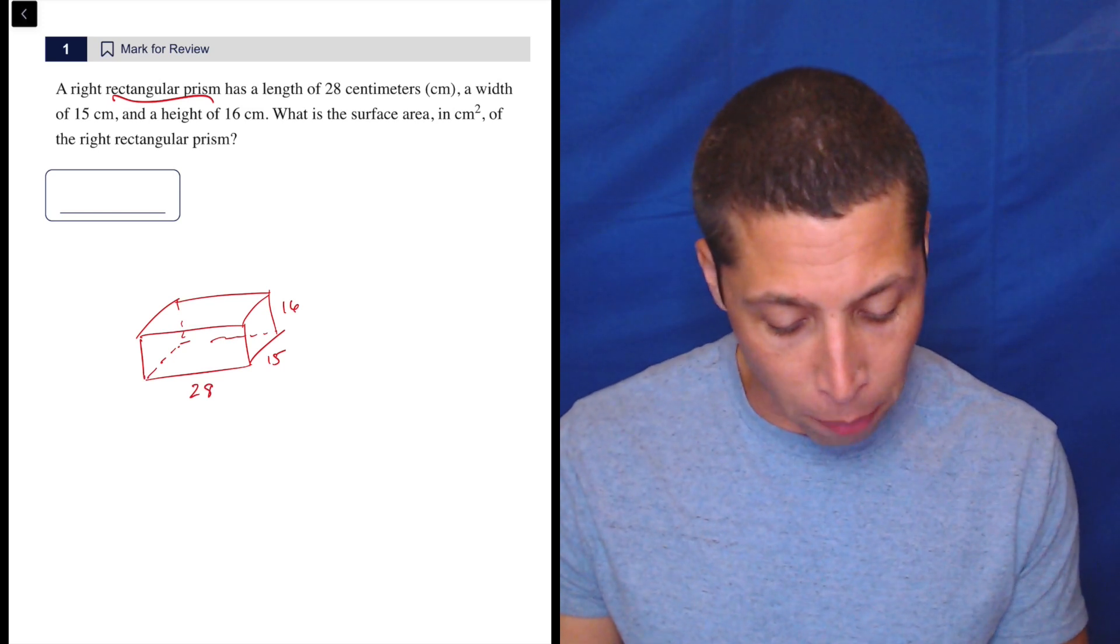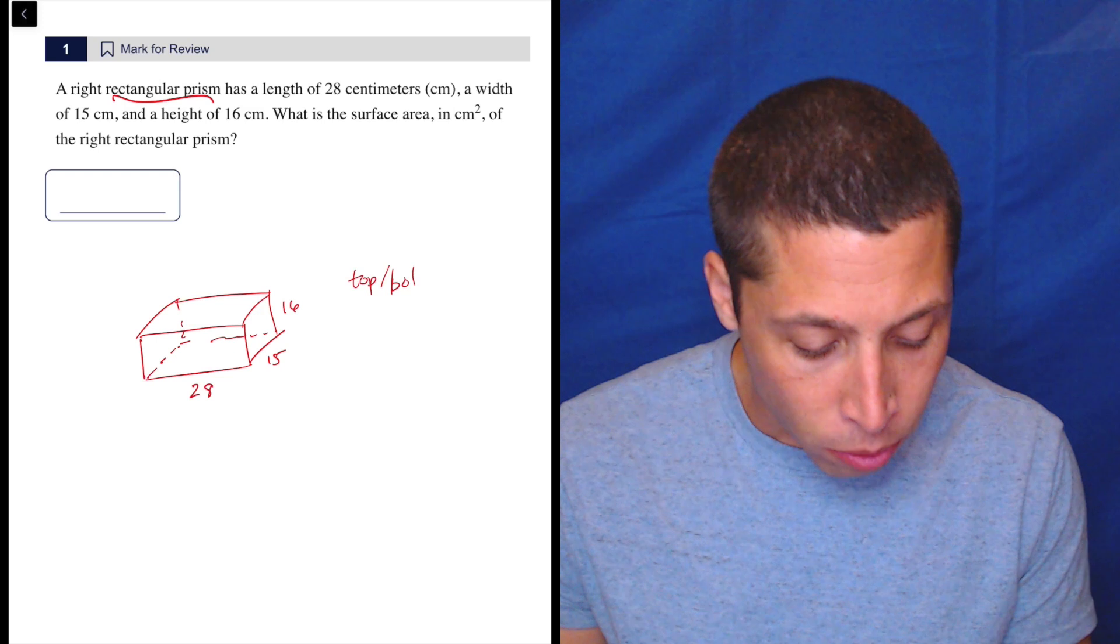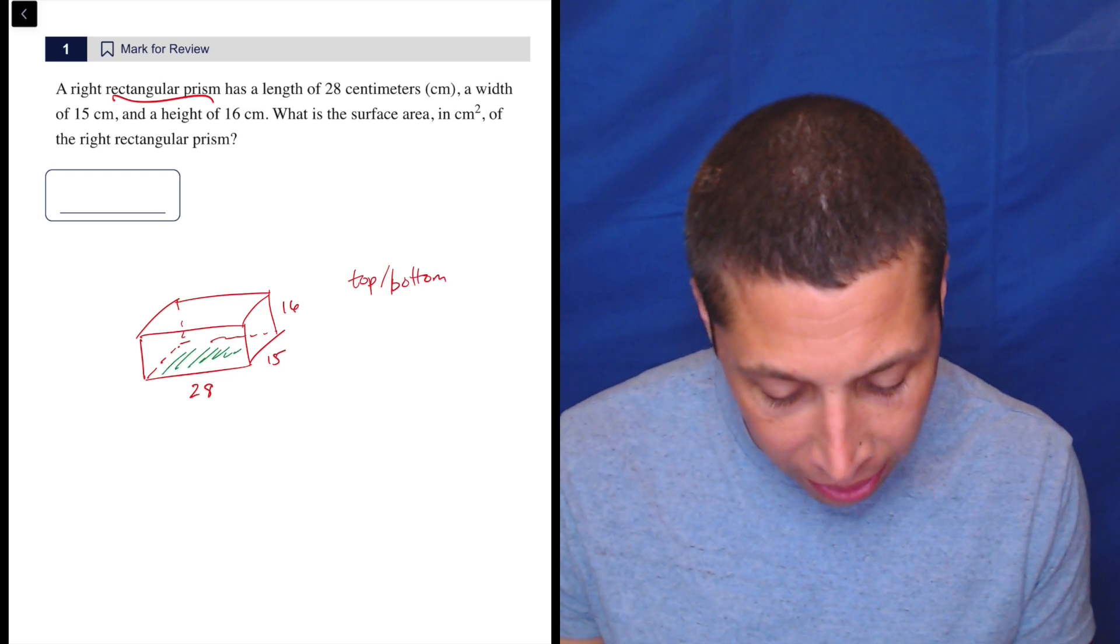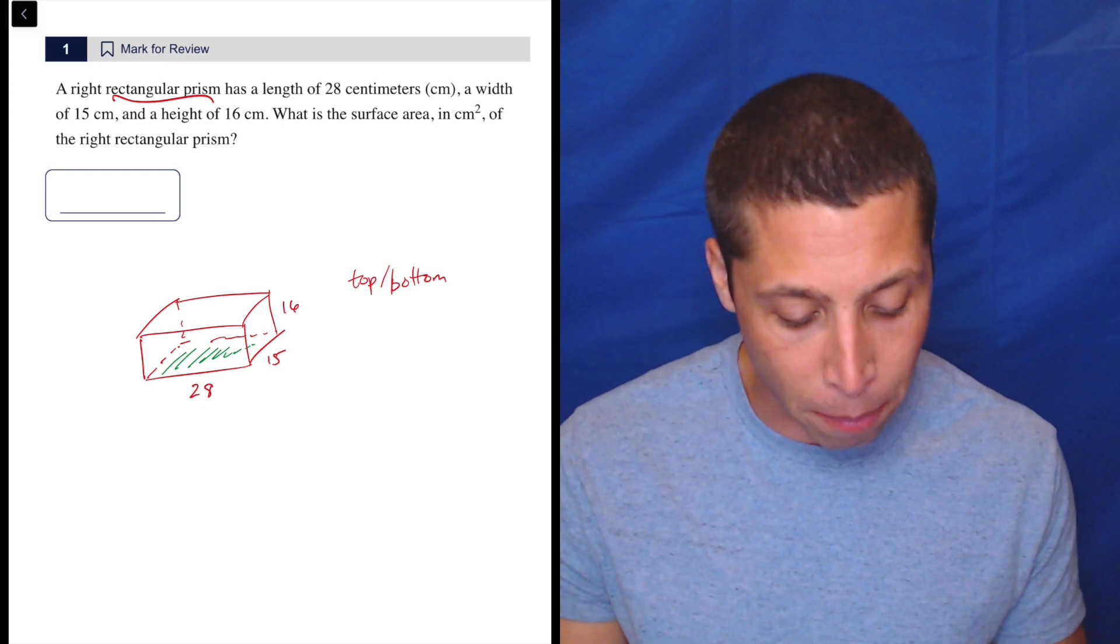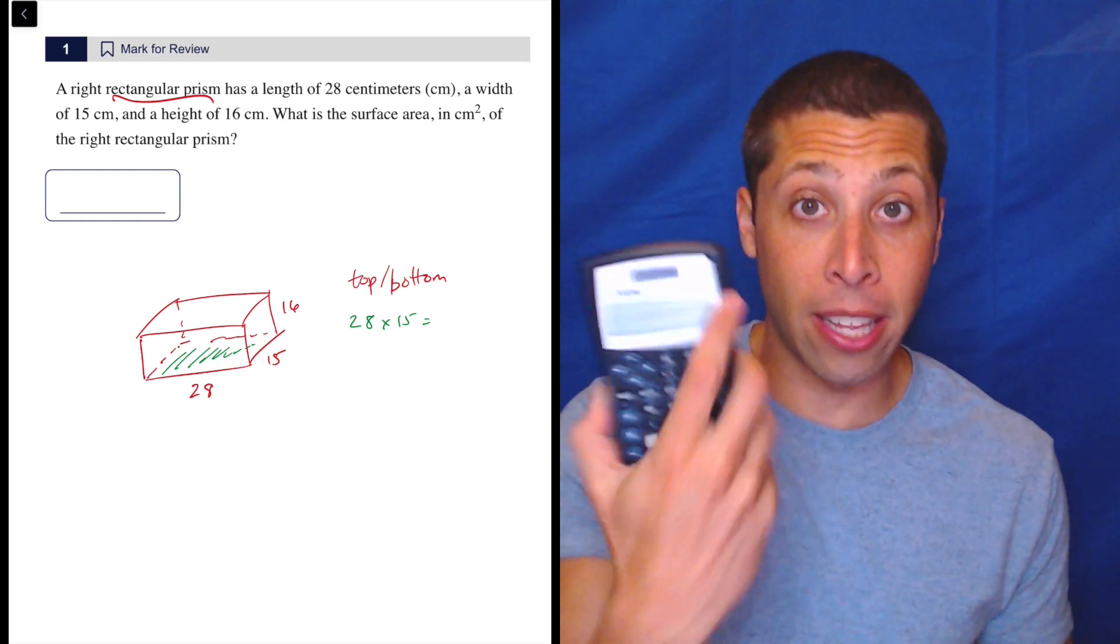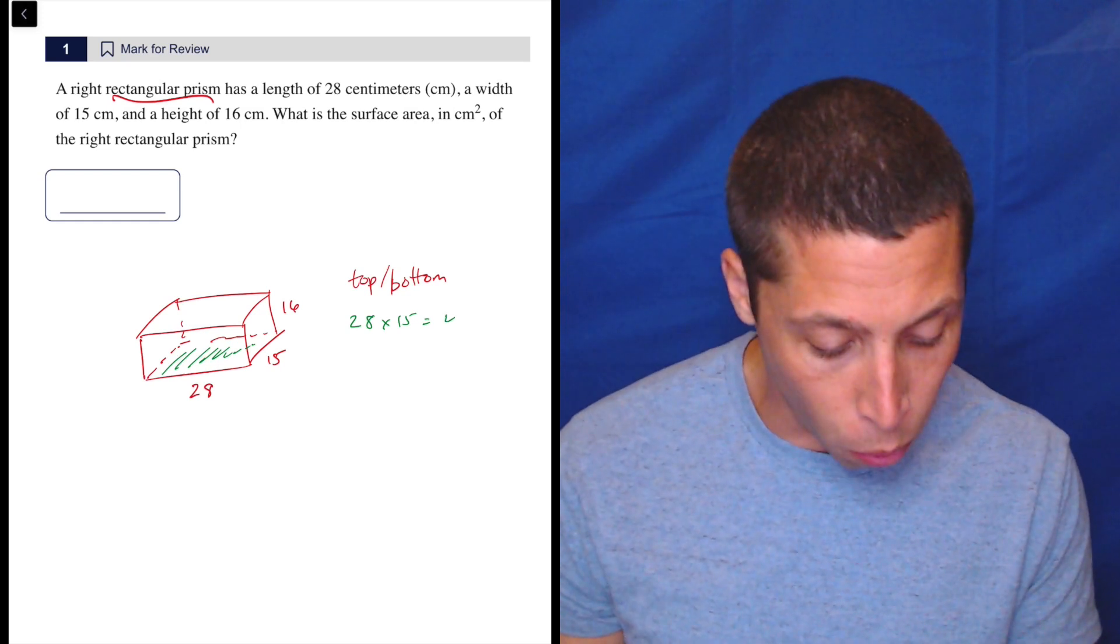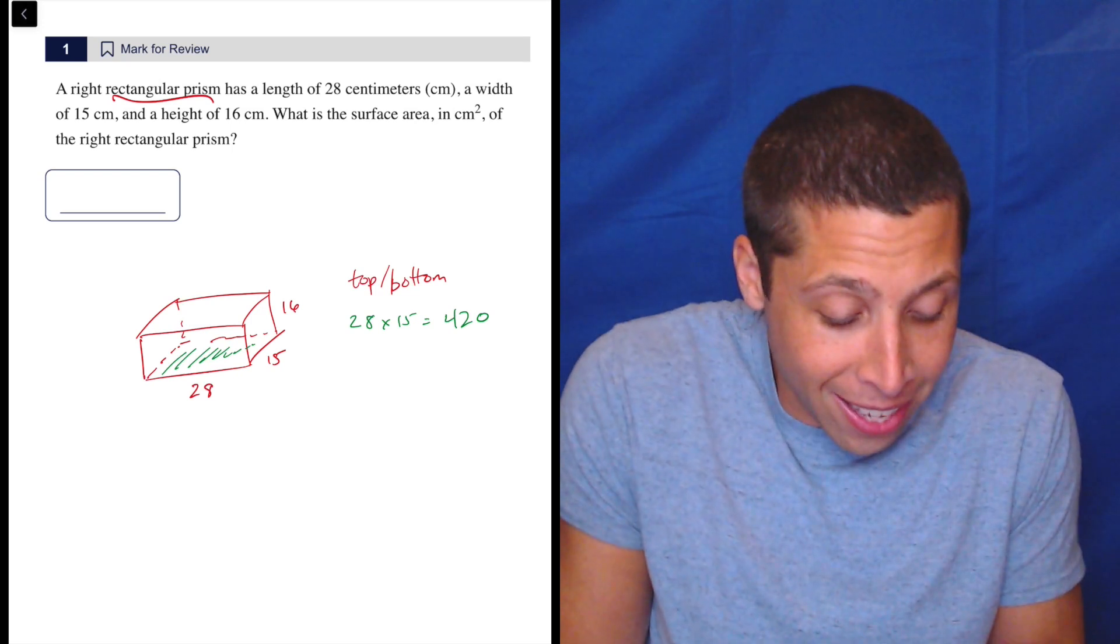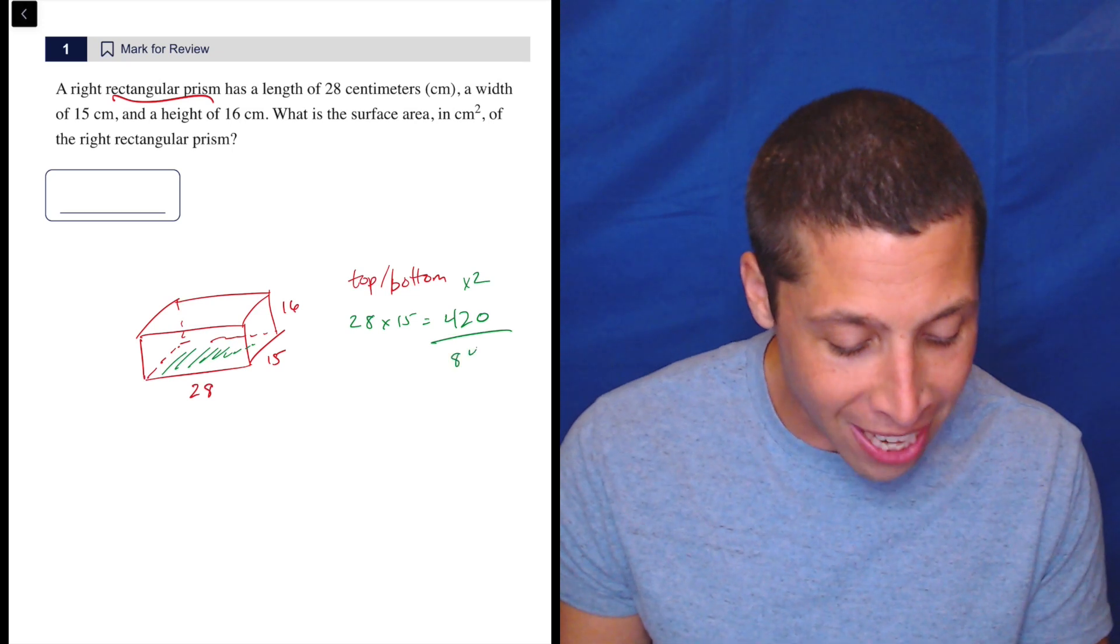So let's start with what I would call the top and the bottom. So the top and the bottom are going to be, I'm going to try my best to draw it. It's going to be kind of like this face here, and then on the top as well, we have the same thing. So they're 28 by 15. So 28 by 15, we can just put that in a normal calculator here. So 28 by 15 is 420. So there's two of those. Let's worry about that maybe at the end. I don't know. Do you want to do it now? So you're going to multiply that by two. That's 840.